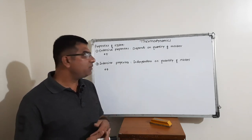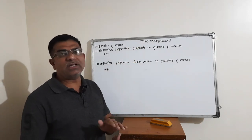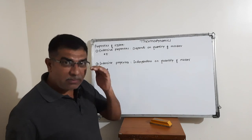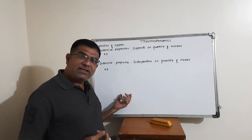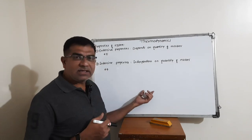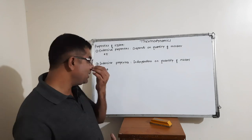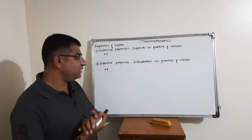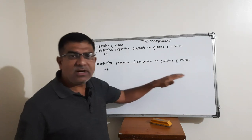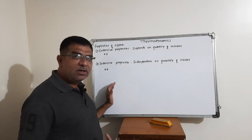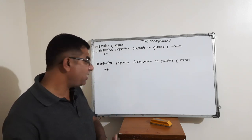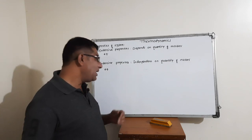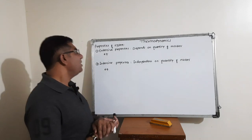In thermodynamics, we first think about the universe: system plus surrounding is equal to universe. The system is defined as the part of the universe which is under thermodynamic observation. The surrounding is defined as the part of the universe except the system. There are three types of systems: an open system exchanges both matter and energy with the surrounding; a closed system exchanges only energy, not matter; and an isolated system exchanges neither matter nor energy. The human body is an example of an open system.